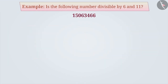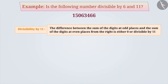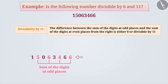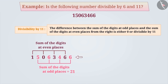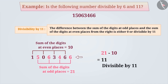Now, let's check the divisibility by 11. In order to do this, we need to find the sum of the digits at odd places from the right. The digits at odd places are 6, 4, 6, 5, and their sum is 21. Similarly, the digits at even places are 6, 3, 0, 1, and their sum is 10. The difference between these two results is 11, which is divisible by 11. Therefore, the given number is divisible by 11.